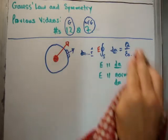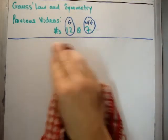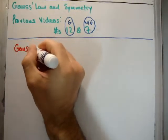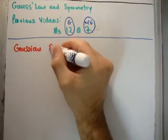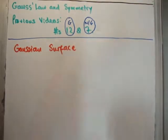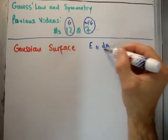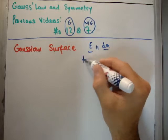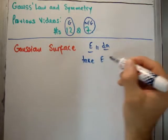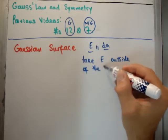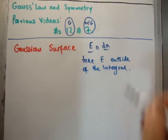So what we tried to do is come up with a Gaussian surface which makes the integral easier. So we use the phrase Gaussian surface. And the purpose of the Gaussian surface is to choose a surface around your charge which makes E parallel to dA in general. That's what you really want, so that you can take E outside of the integral.